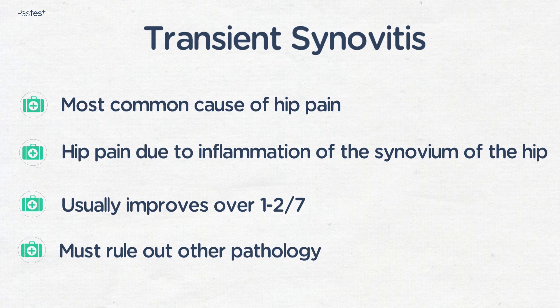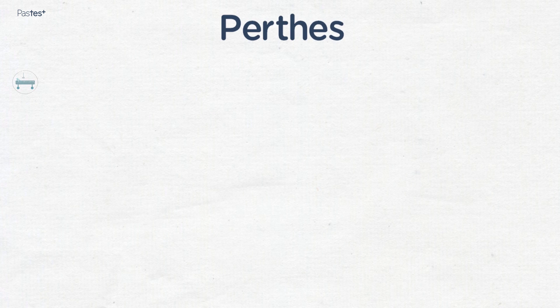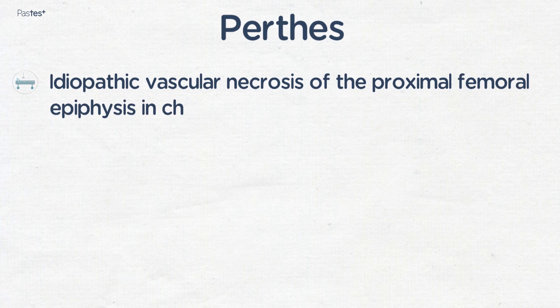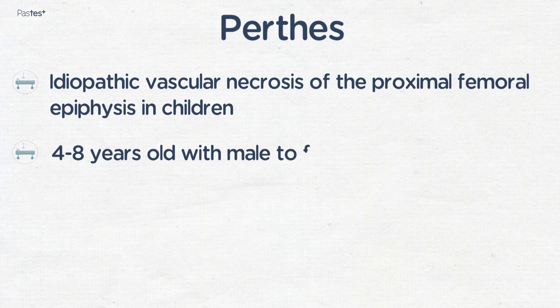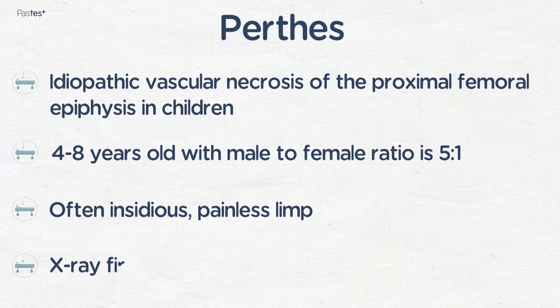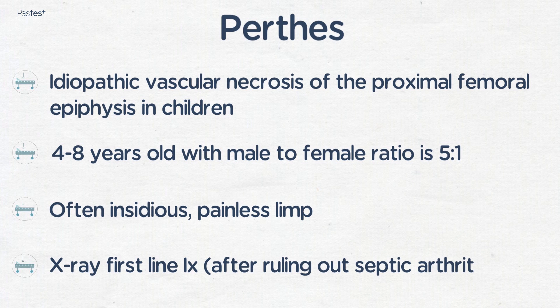The other two conditions you should be aware of in the limping child is Perthes disease, which is avascular necrosis of the proximal femoral epiphysis. This is much more common in males and happens in the four to eight-year-old group. It often has an insidious history with a painless limp. You should take a detailed history, investigate for septic arthritis, and x-ray is your first-line investigation.